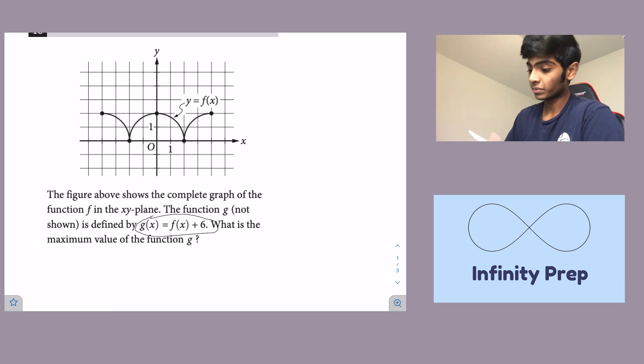So all we really have to do is, we know the maximum value here is going to be 2, right, because that's the point at which the y value is the greatest. So all we have to do is move that up 6 and that's going to give us the maximum value of g.